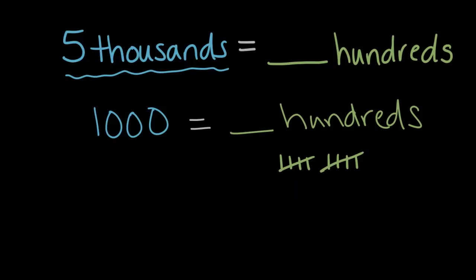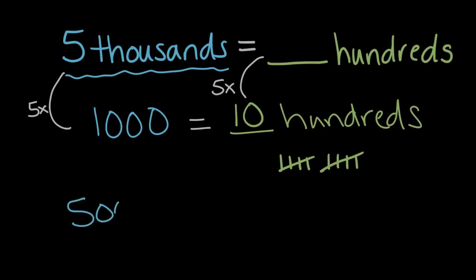So it took ten hundreds to get to a thousand. So one thousand is ten hundreds. So what would five thousand be? Well, five thousand is five times as many thousands, so we're also going to have five times as many hundreds. Five thousands will equal five times ten hundreds.